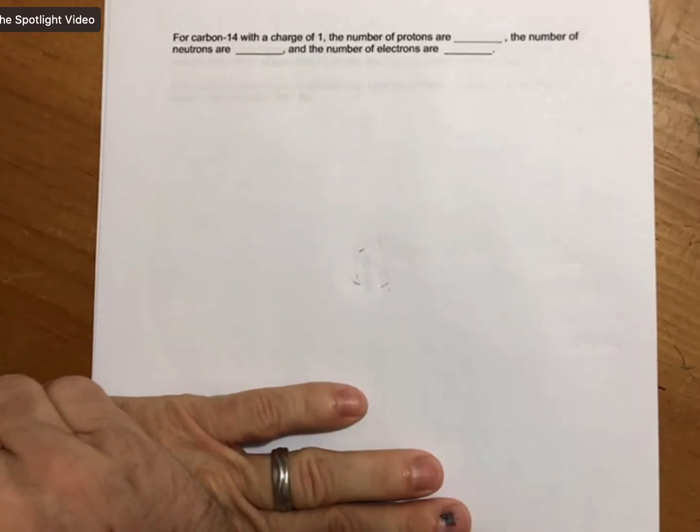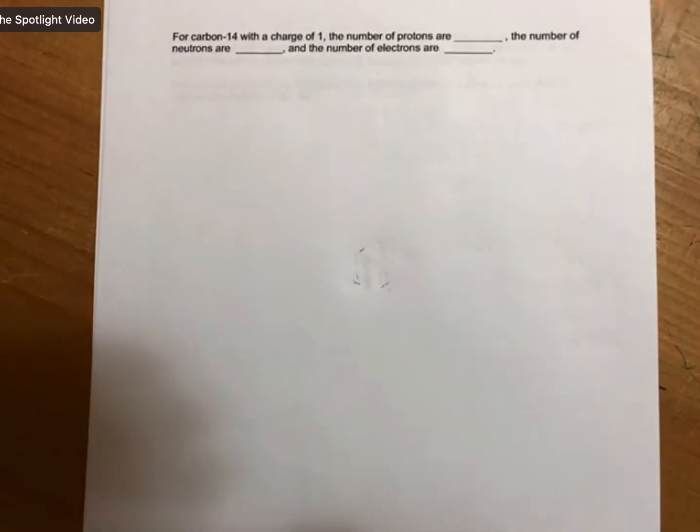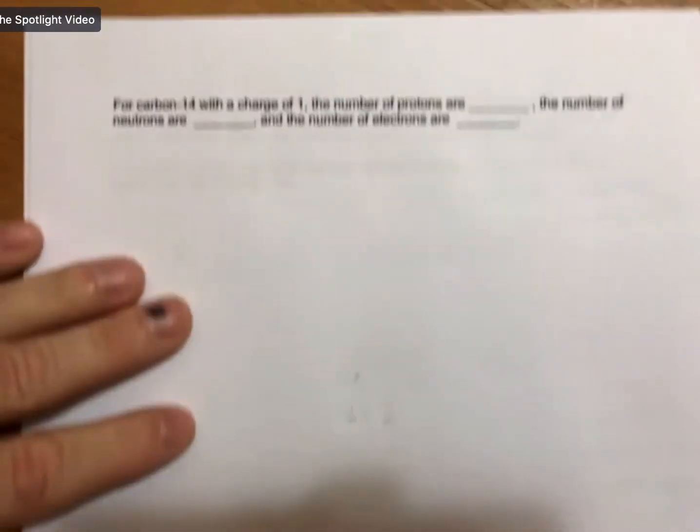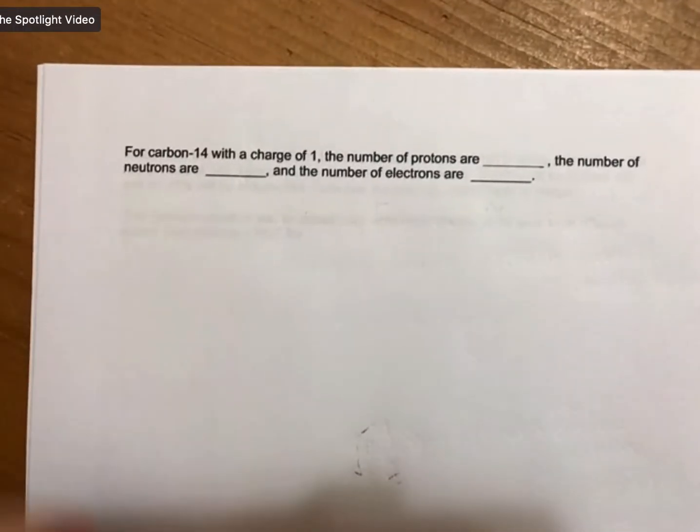For carbon with a charge of one, I'll zoom in a little bit here. The number of protons are blank, neutrons blank, and electrons are blank.